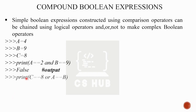Another example: print(c == 8) — c equals 8, so this is True. Then using 'or': a == b is False, c == 8 is True, so True or False gives True. That is the output. This demonstrates compound boolean expressions.